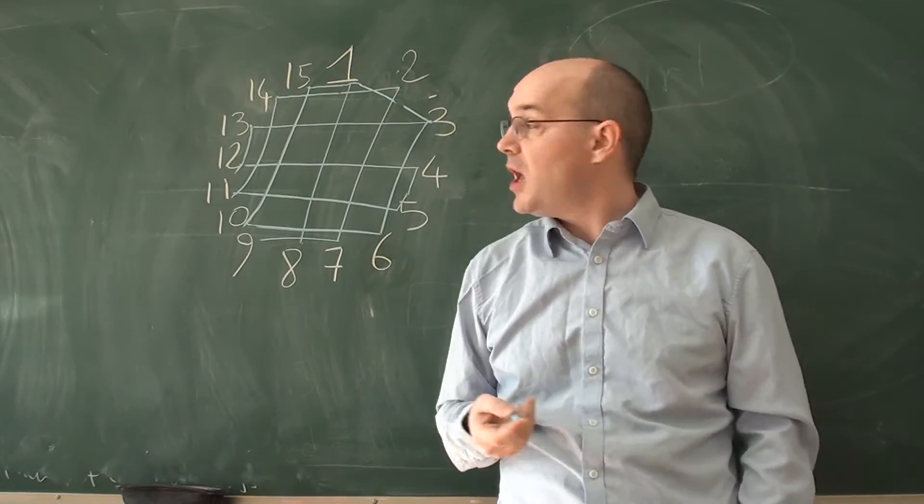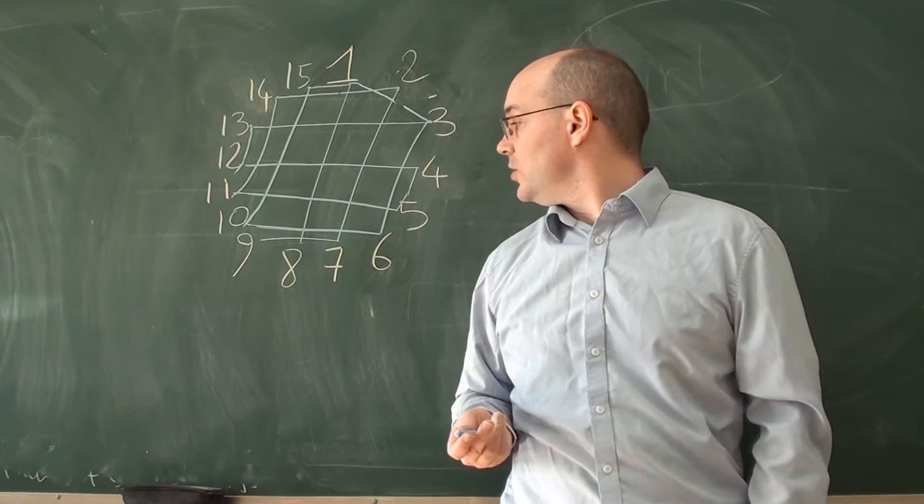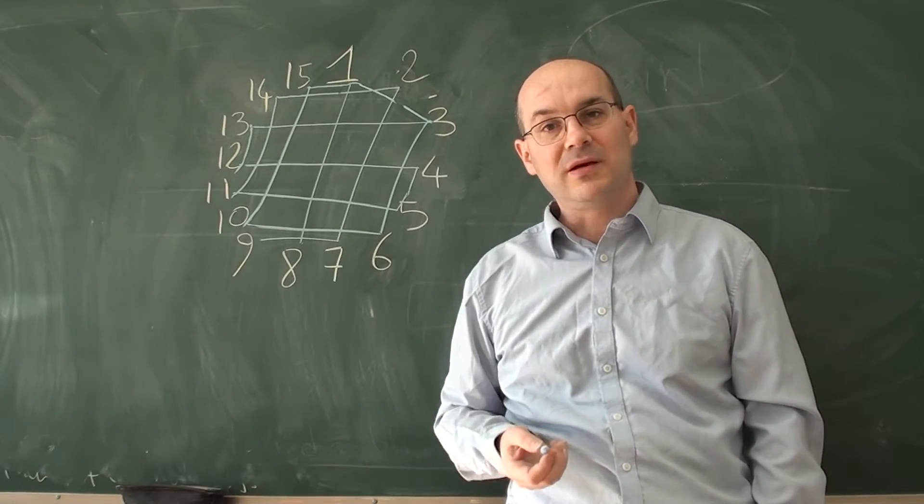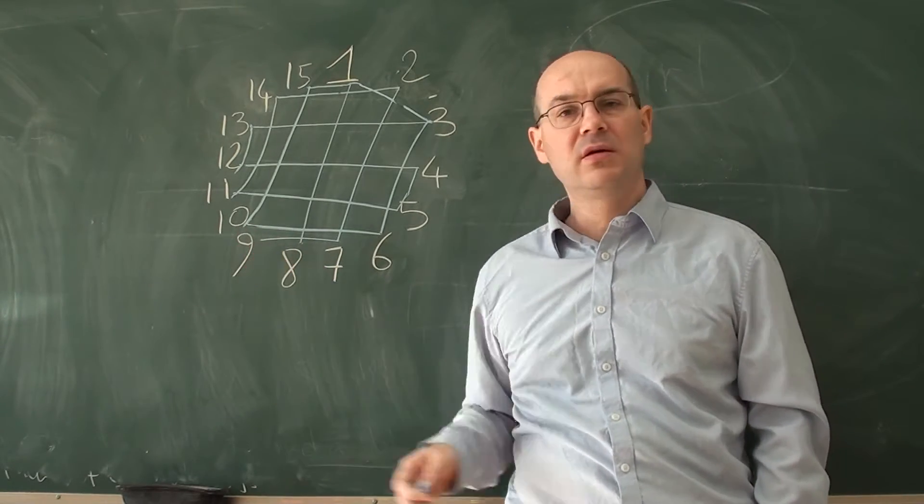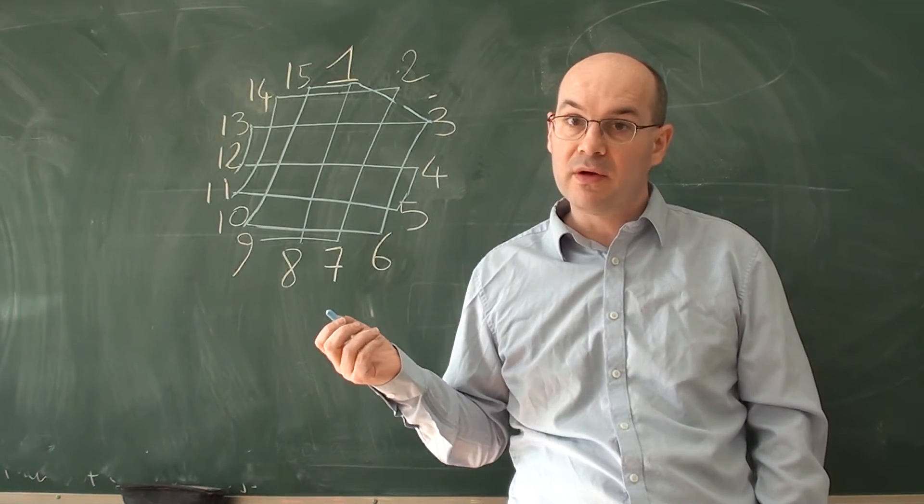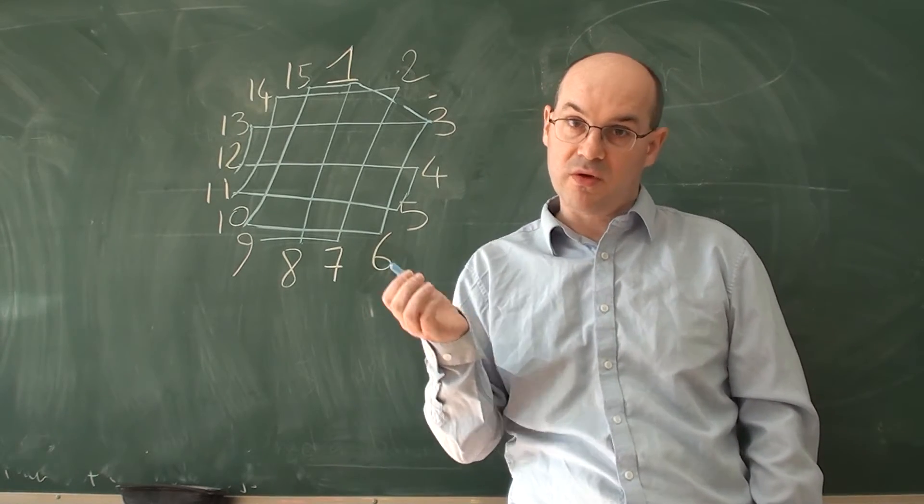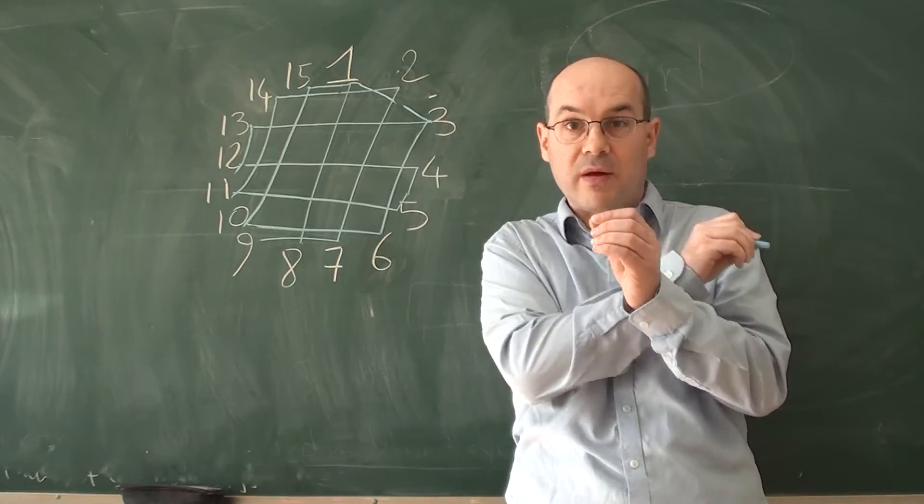So you see it's not very difficult. And once you're here, you've got your solutions. You can see that 8 and 9 are the only ones with only one line towards them. In other words, you can start from them, you can finish with them, but you cannot go past through them.